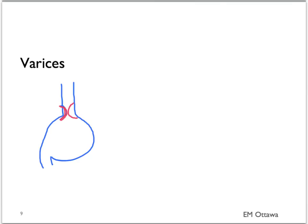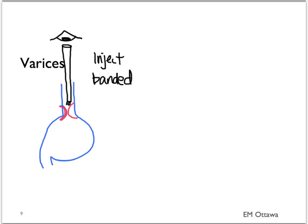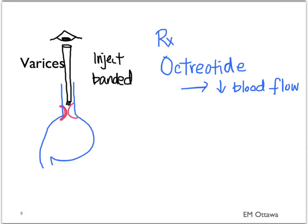For varices, endoscopy is again the main treatment. During endoscopy, esophageal varices can be injected or banded to decrease bleeding. There are also a few medications we can give, including octreotide, which decreases blood flow to the gut and therefore decreases bleeding. Another medication often overlooked is an antibiotic, usually a fluoroquinolone, which should be given to patients who have cirrhosis with variceal bleed, as it decreases infection and mortality.